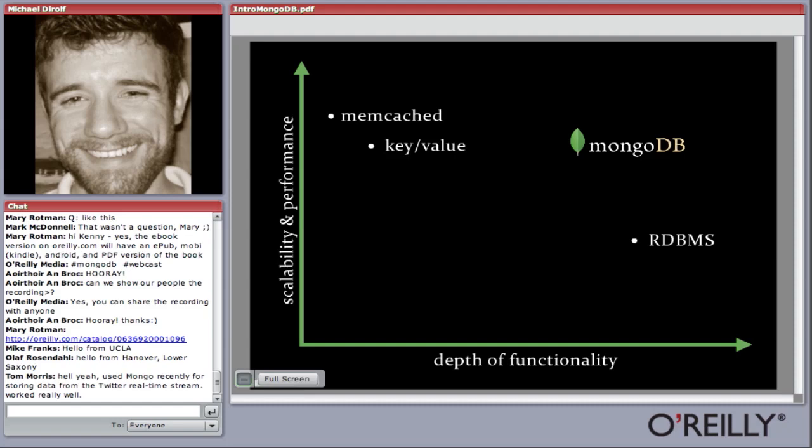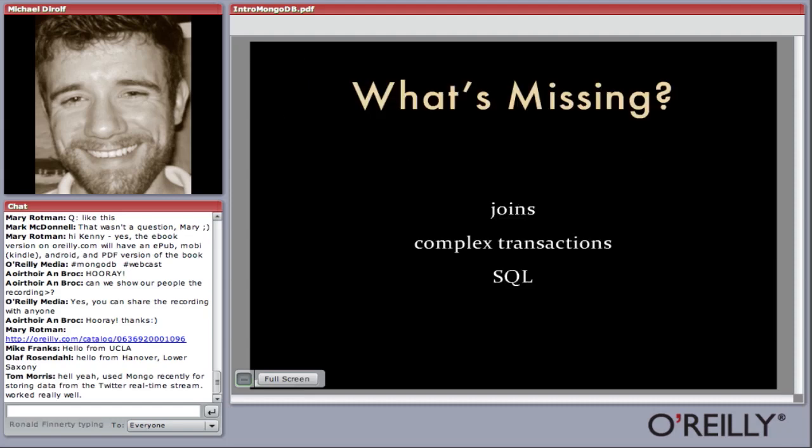On the other side is the relational database, which lets you do joins and complex multi-row transactions — basically any functionality you could possibly want. But as the web grows, we've seen that relational databases sometimes can't deliver the types of scalability and performance we need. With MongoDB, what we're really trying to do is get the scalability and performance of a key-value store and push as far to the right as possible in terms of functionality — getting as much of that relational database functionality as possible.